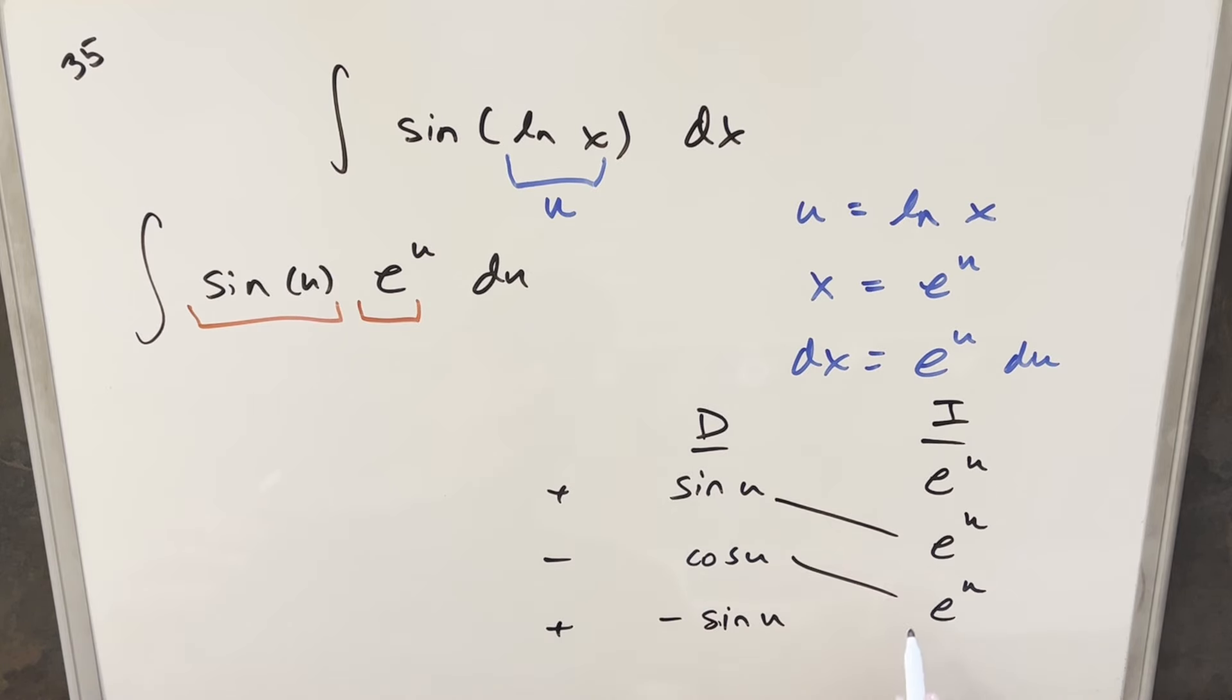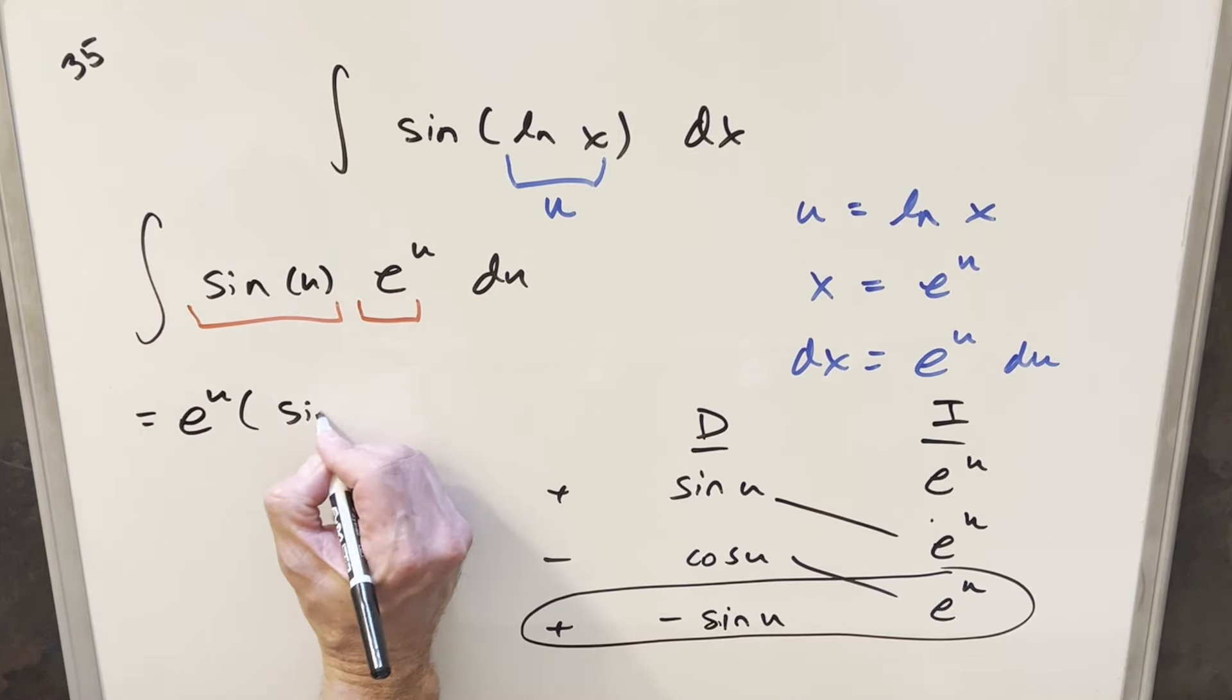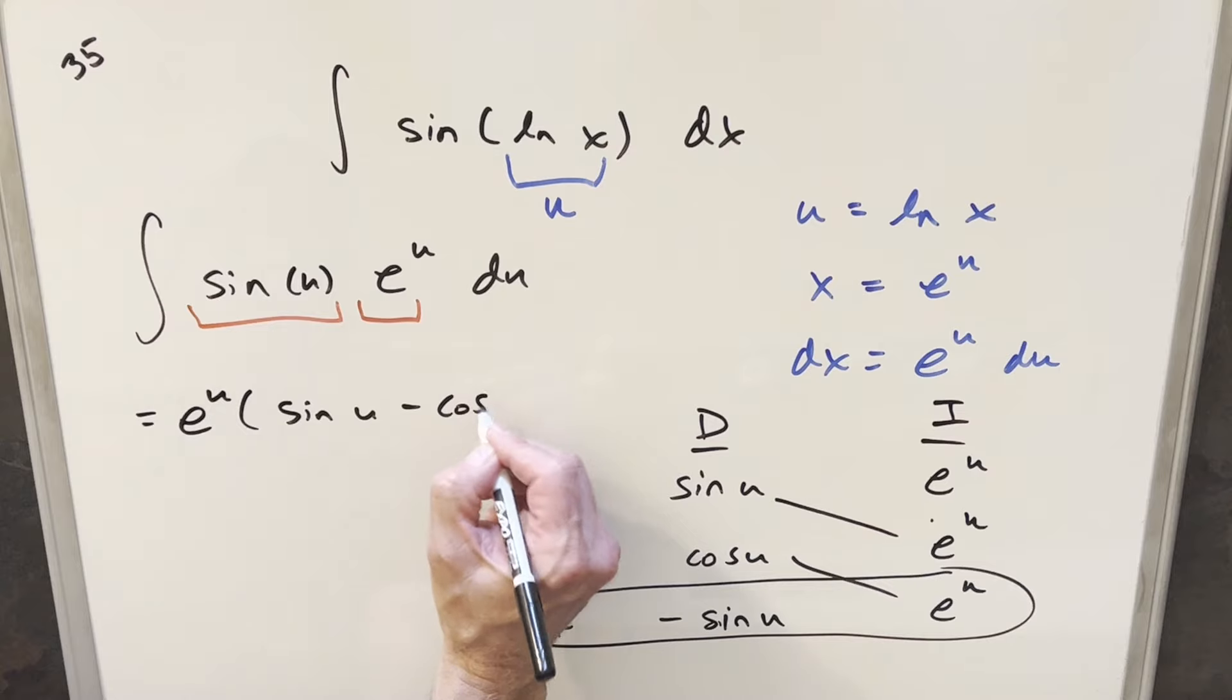We'll have part of our solution on the diagonals in the last row. This is just going to be an integral. Now we've got e to the u in common here. So when I do this, let's factor out the e to the u in front, and then what we're left with is just going to be sine u minus cos u.